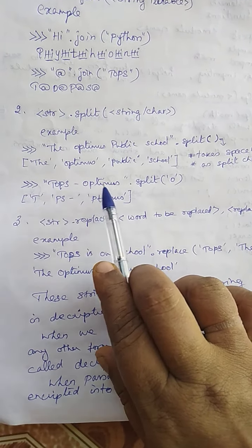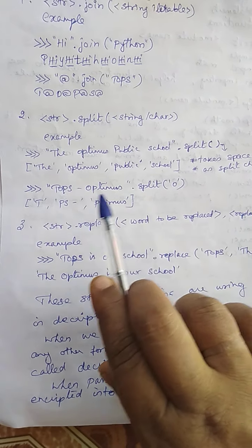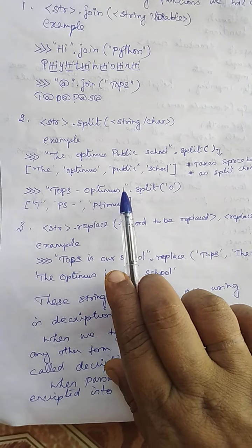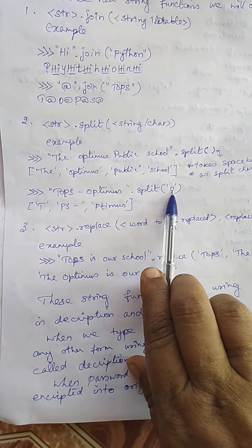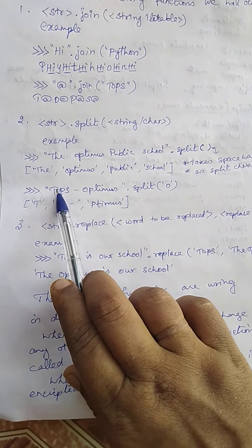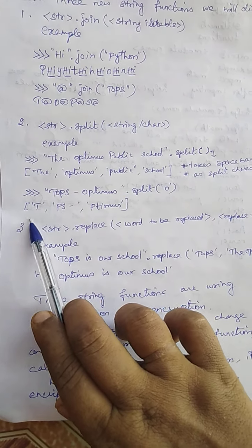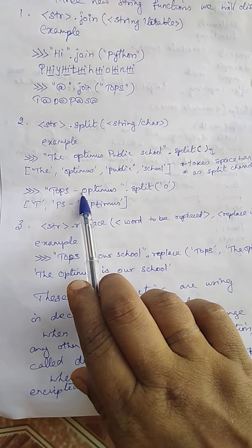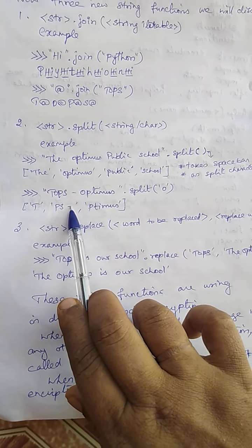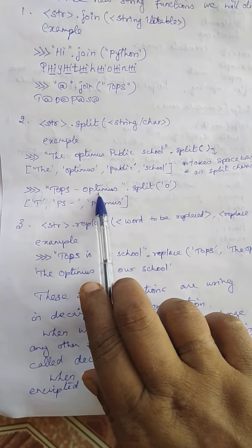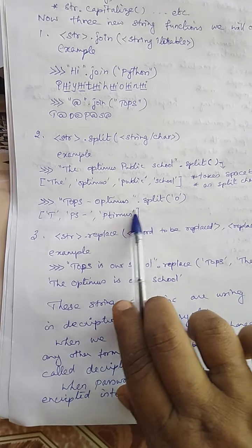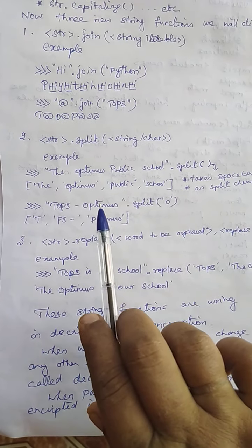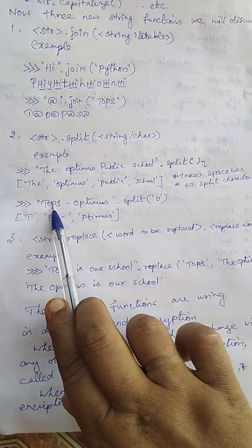See here: 'tops-optimus' is a string. Now we are going to split on the character 'o'. Wherever 'o' is found, the string is going to be split. See: 'tops-optimus' dot split of character 'o'. Now 't' becomes one part because 'o' comes after it — so up to that point the string is split, giving 't'. Then 'ps-' up to the next 'o' becomes another string. Then the remaining 'ptimus' becomes another string. The splitting character 'o' does not appear in the results.